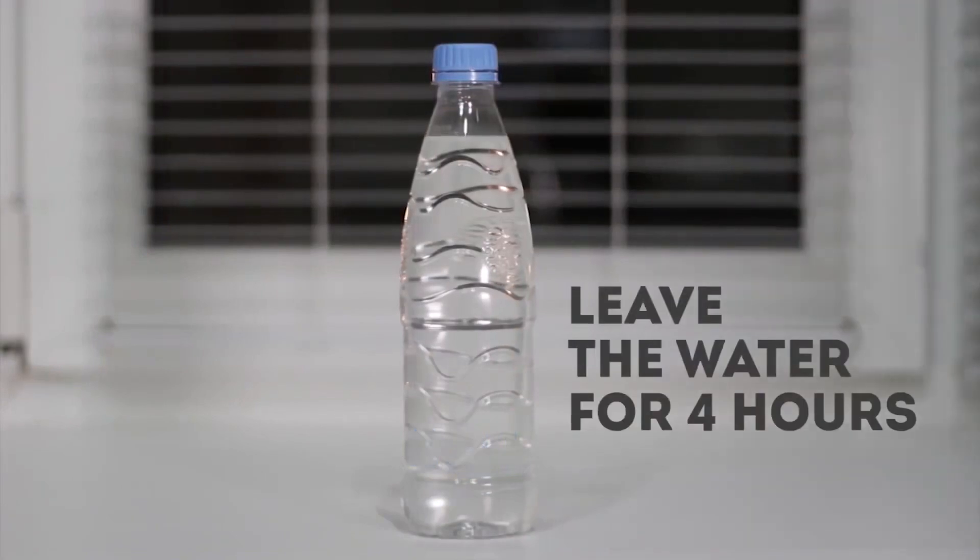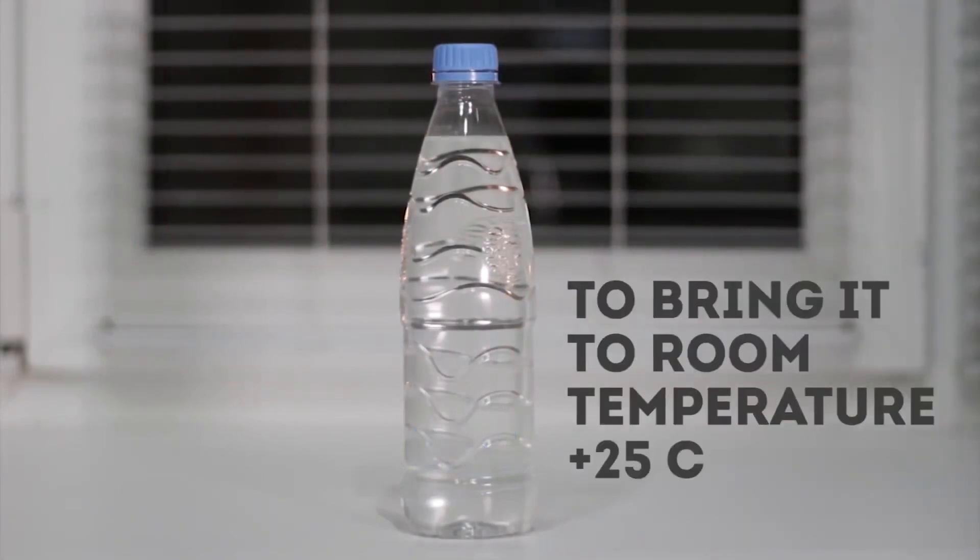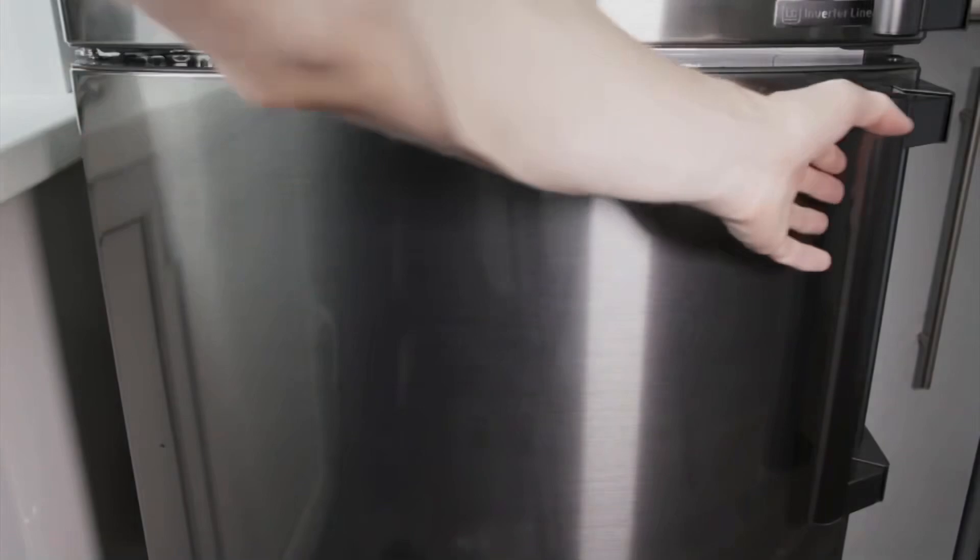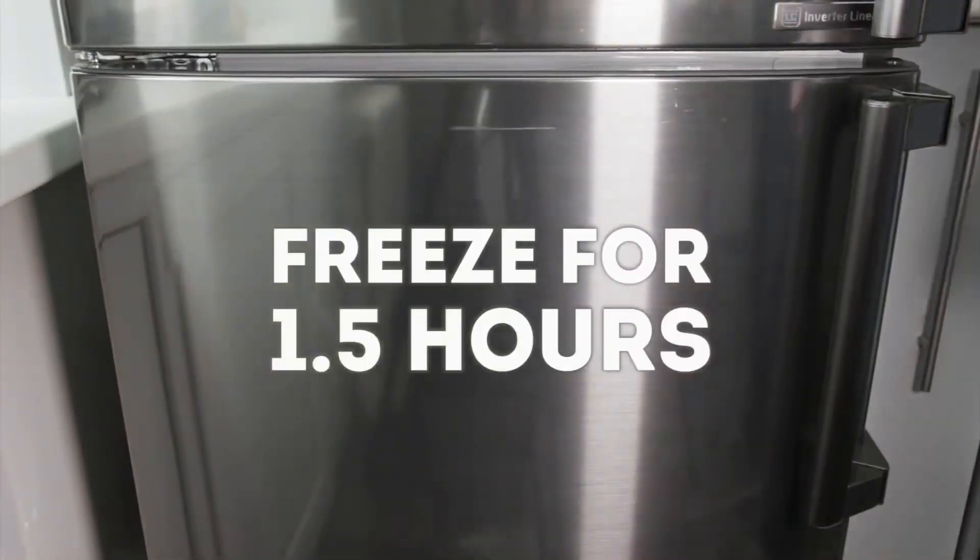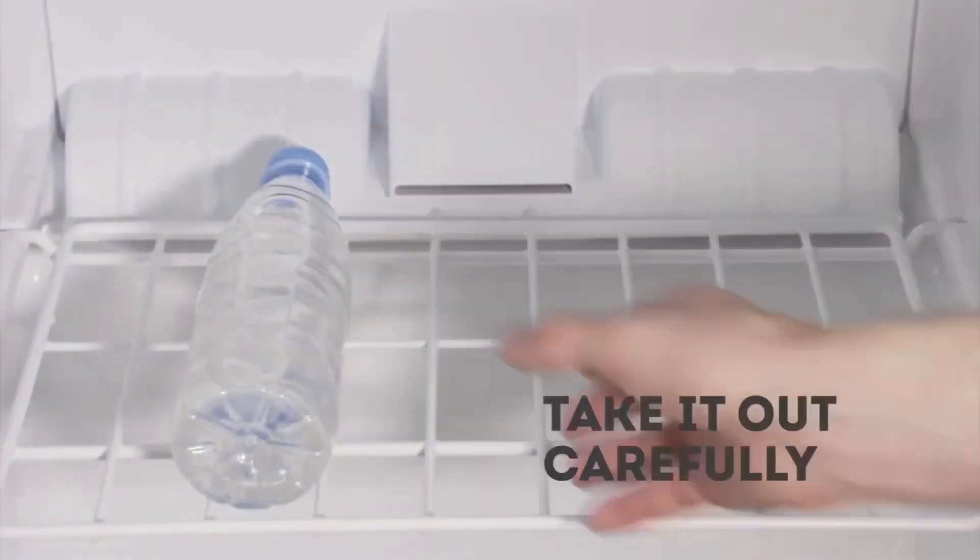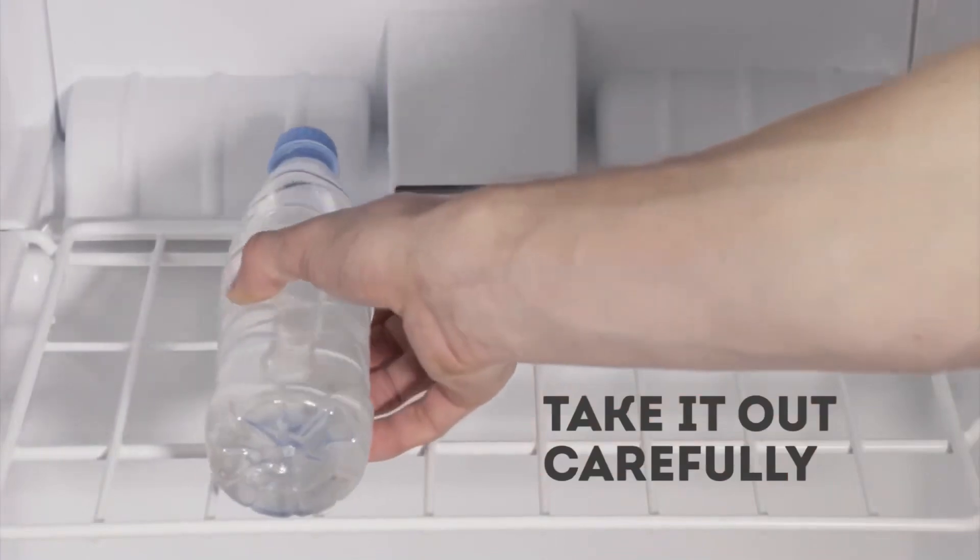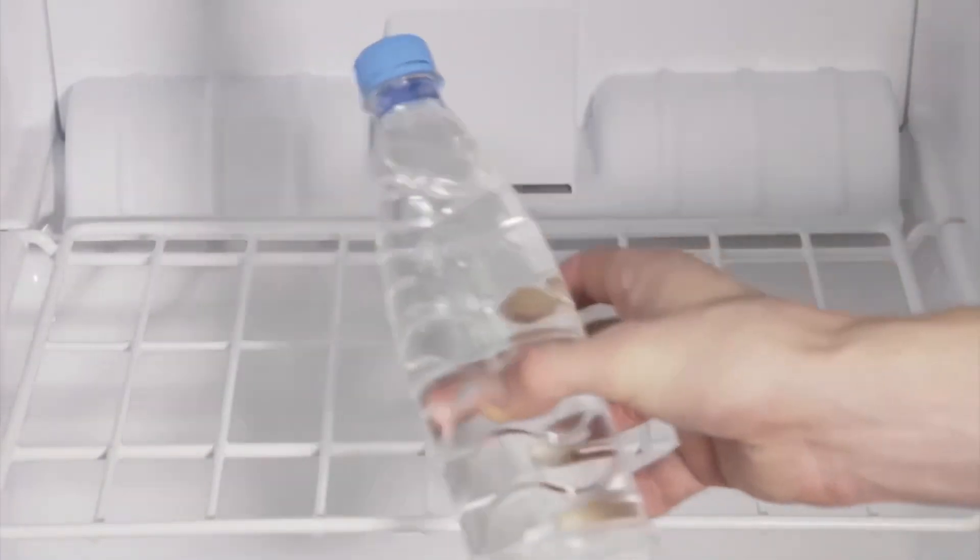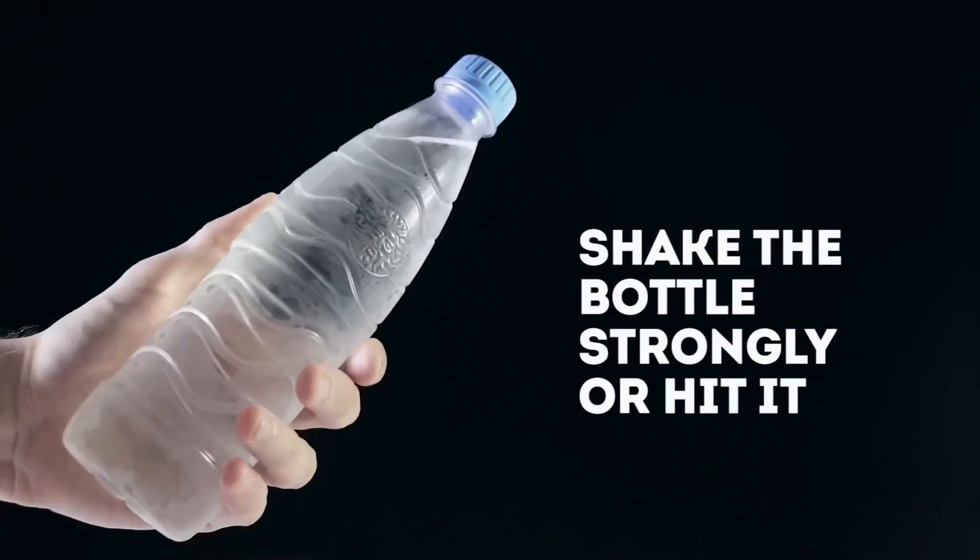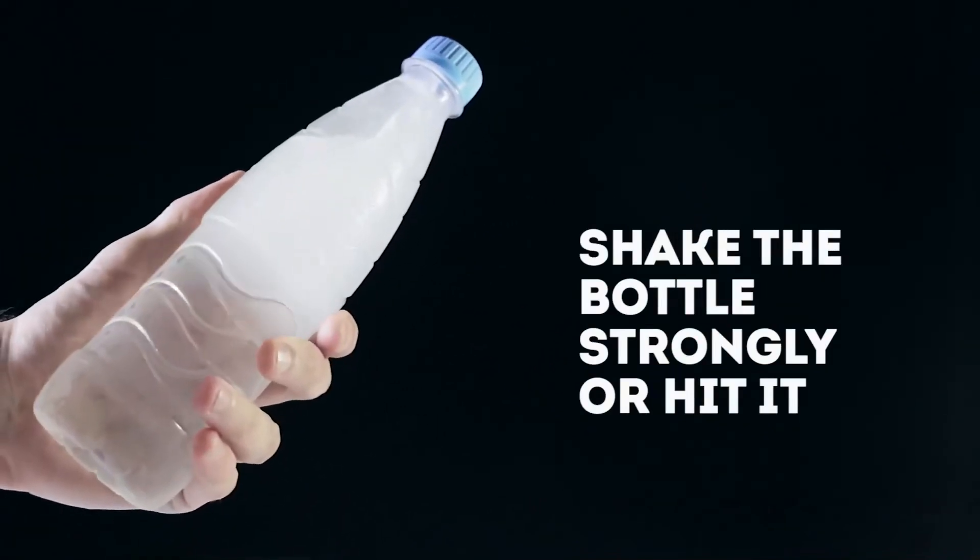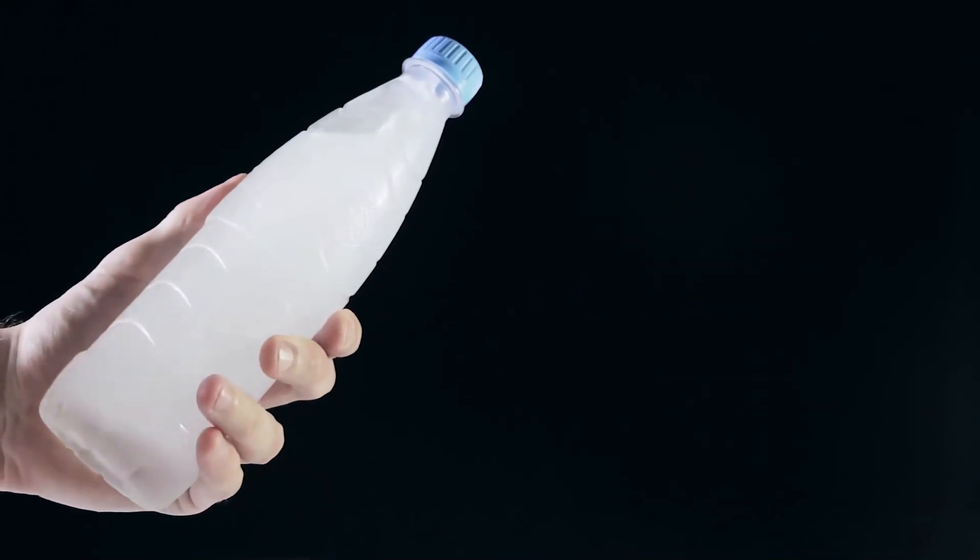We will need half a liter of water in a bottle. Let's leave it for about four hours, and then put it in the freezer for another hour and a half. Water as well. Carefully take it back out. Now strike one light blow, and the water starts to freeze right in front of your eyes. Incredible, isn't it?